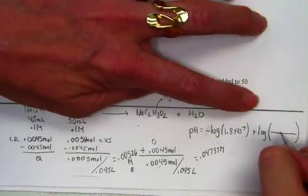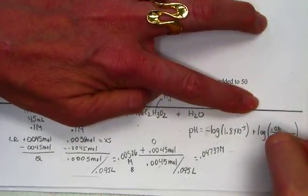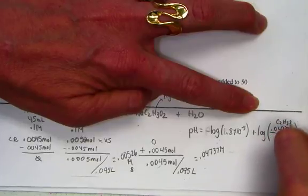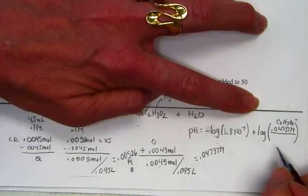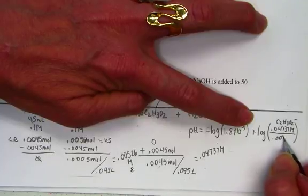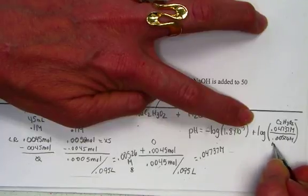The molarity of the base, the conjugate base, is the sodium acetate, 0.04737 molar. Over the concentration left of the acid, after most of it was consumed, we have 0.00526 molar of the acid.